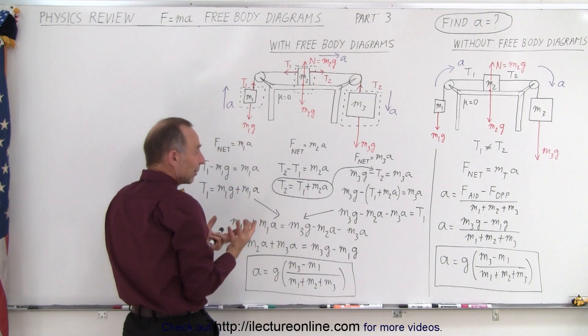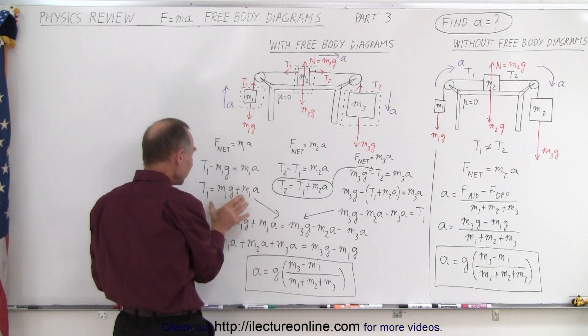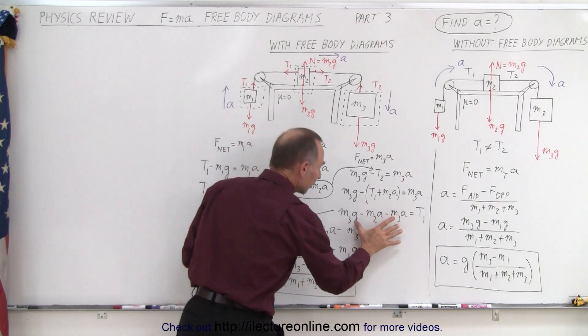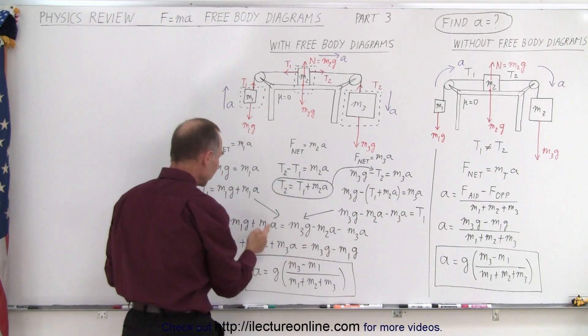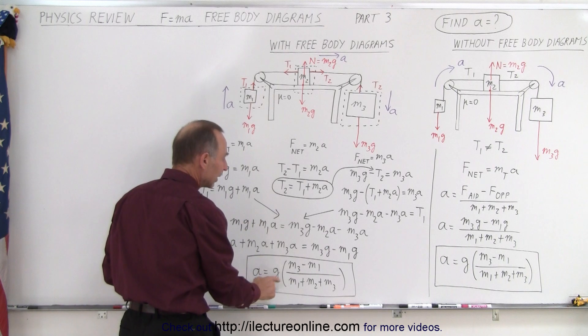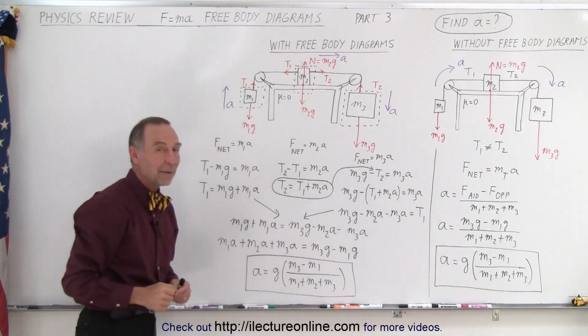So we can solve them simultaneously. We can set them equal to each other. T1 equals this. T1 equals this. Set those equal to each other. Solve that for A algebraically. And you get the exact same answer.